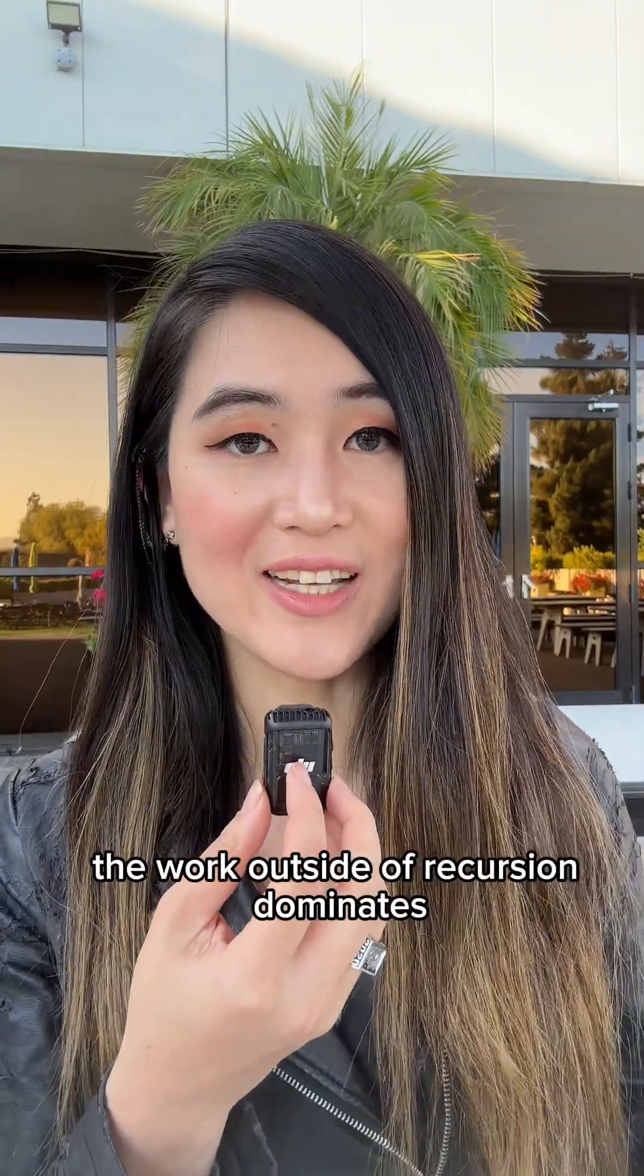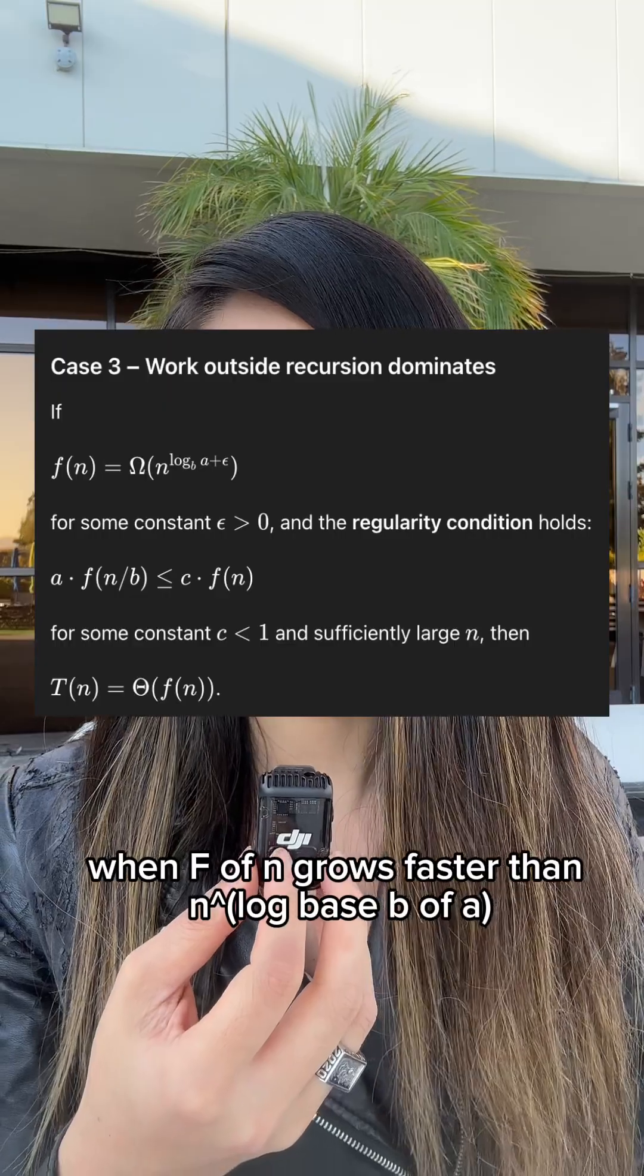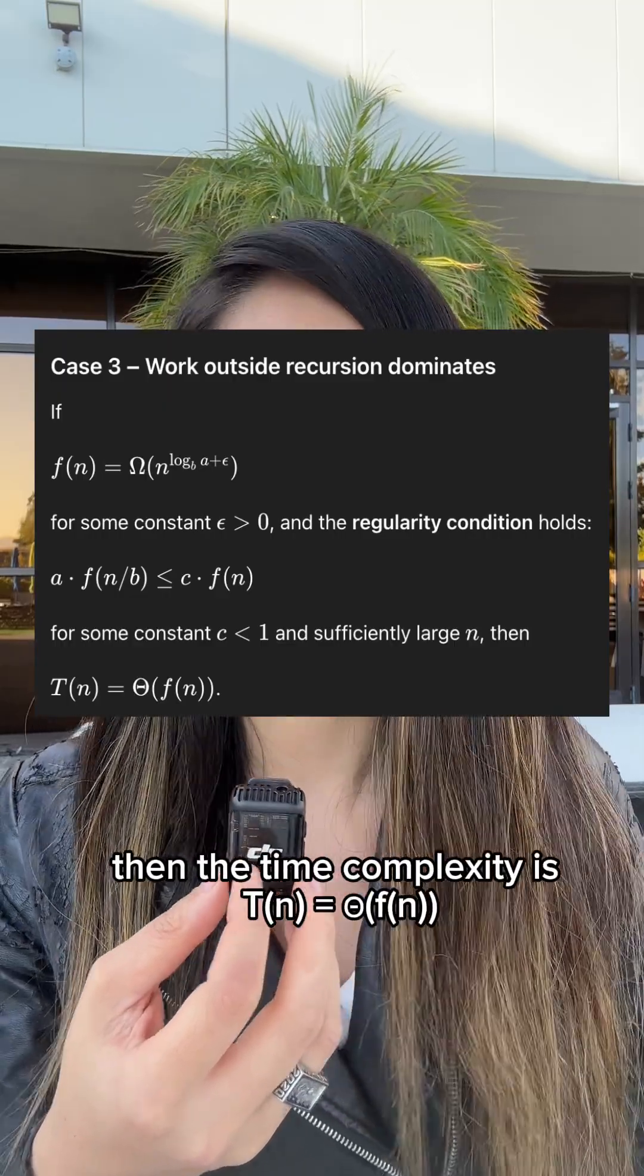In case three, the work outside of recursion dominates. When f(n) grows faster than n to the power of log base b of a, then the time complexity is theta of f(n).